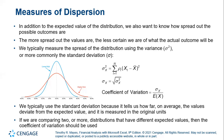The coefficient of variation is the standard deviation divided by the expected value. We typically use the standard deviation because it tells us how far, on average, the values deviate from the expected value, and it's measured in original units. If we are comparing two or more distributions that have different expected values, then the coefficient of variation should be used.